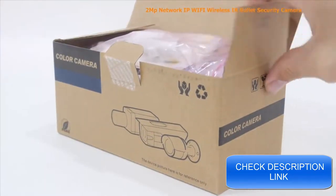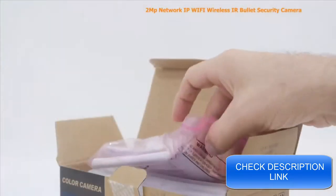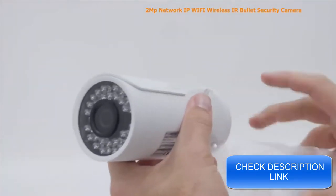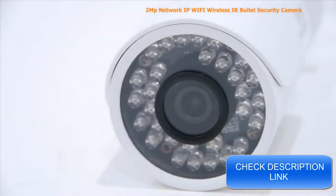This is our 2 megapixel Network IP Wi-Fi wireless IR bullet security camera. This Elite Series camera is one of our first wireless cameras, or can be used as a wired camera if your NVR doesn't support Wi-Fi.